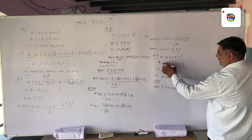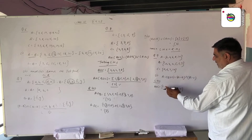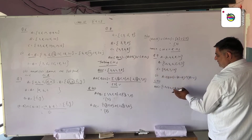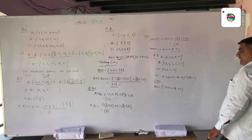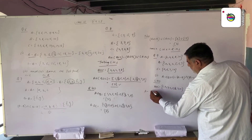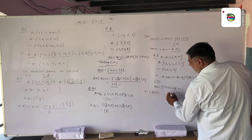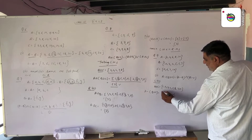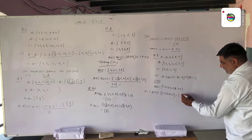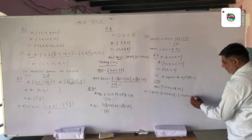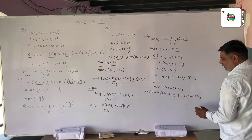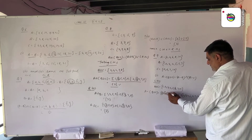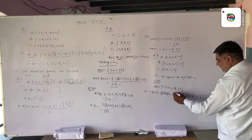So B union C is 1, 2, 3, 4, 5, 6, 7, 10. Now A difference (B union C): element of A is 2, 4, 6, 8, 10 and B union C is 1, 2, 3, 4, 5, 6, 7, 10. The common elements are 2, 4, 6, and 10. These are removed from A.